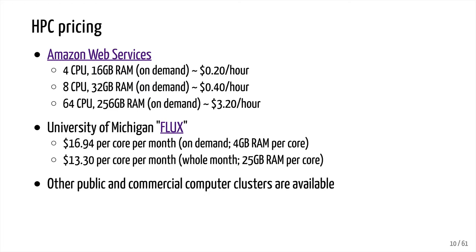There are also other public and commercial computer clusters available. The prices don't include the cost of storage, which is generally pretty cheap. With AWS, you can also get access to various educational discounts. At the University of Michigan, we have Flux, and I pay about $17 per core per month with 4 GB of RAM per core — or $13 per core per month for 25 GB of RAM if I buy the whole month. Computing isn't free, but following along with these tutorials on AWS will cost you maybe just a few bucks.